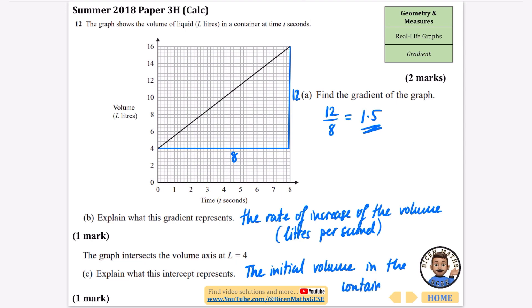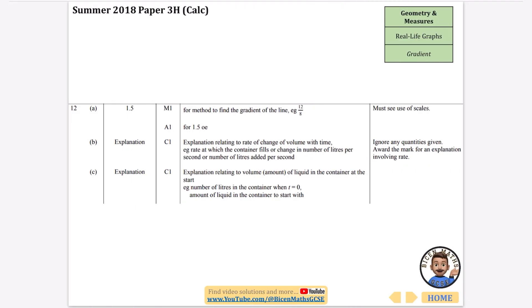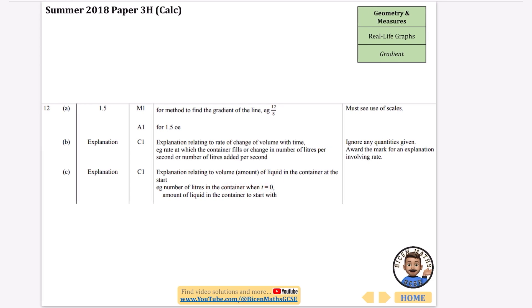Let's double check we've got these right. We've got 1.5, the rate of change of the volume with time, and the number of liters in the container when t equals zero, which is the same as the initial volume.